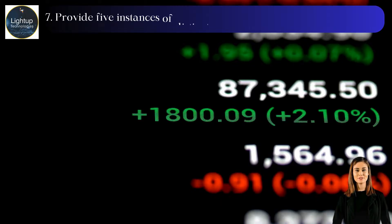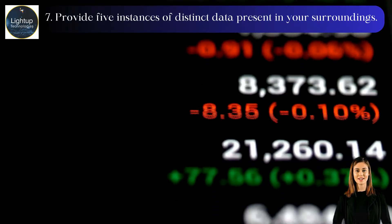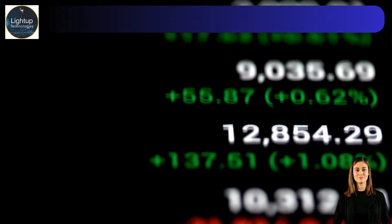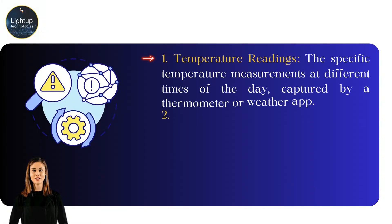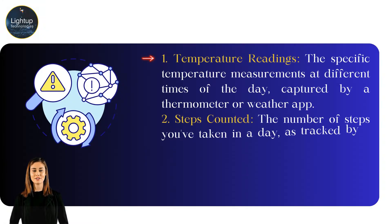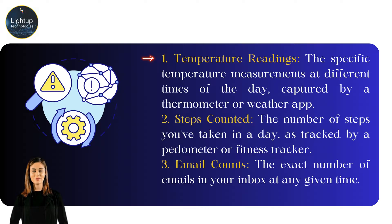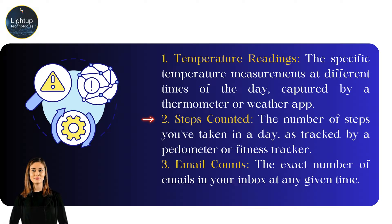Provide five instances of distinct data present in your surroundings. First, temperature readings: the specific temperature measurements at different times of the day, captured by a thermometer or weather app. Second, steps counted: the number of steps you've taken in a day, as tracked by a pedometer or fitness tracker.